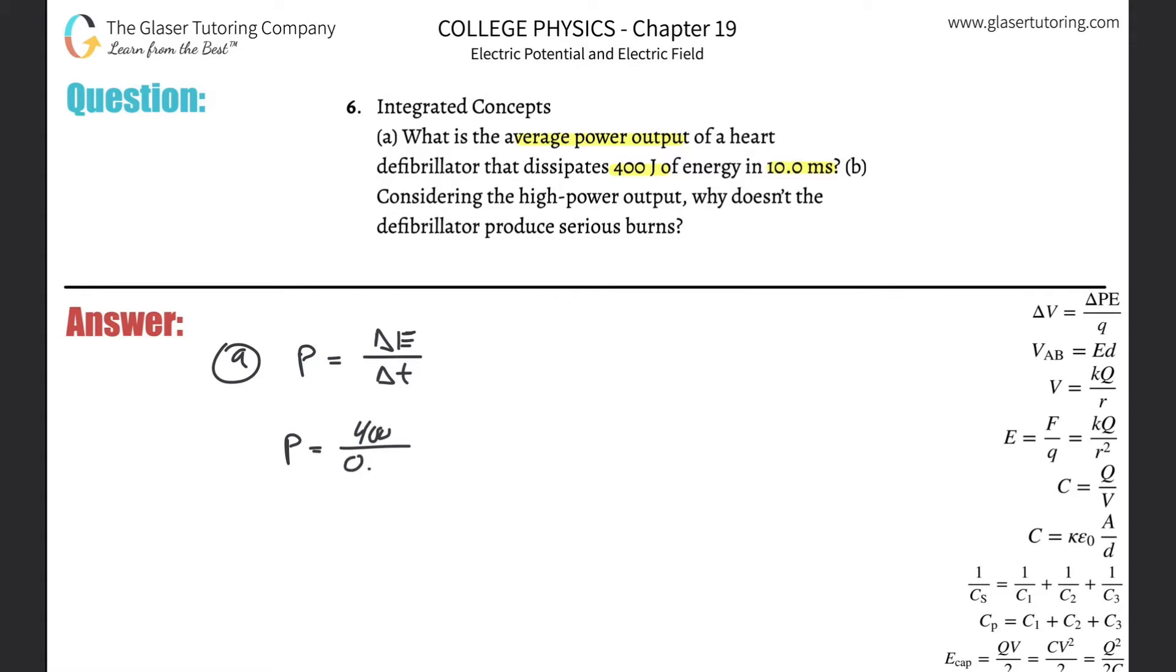That's 0.01 - just take the 10, divide by 1000. So it becomes 400 with two more zeros attached to it. That becomes 40,000 watts. That's the power for letter a.